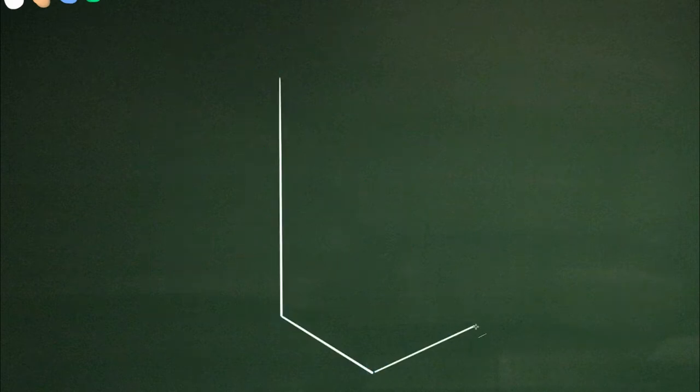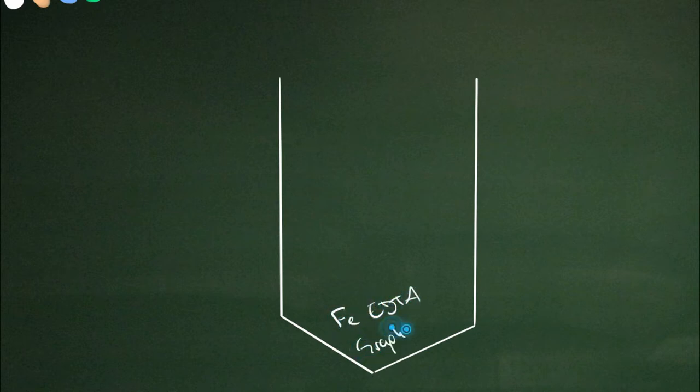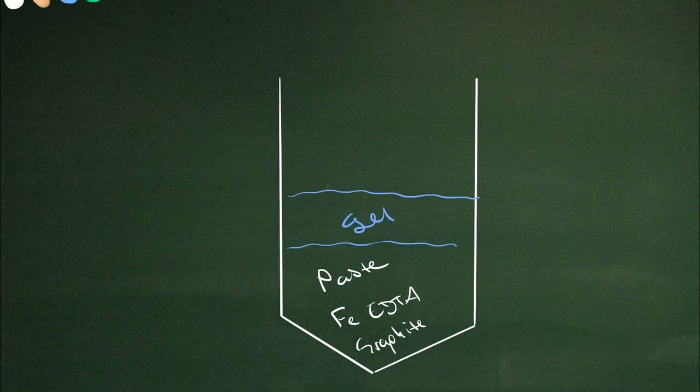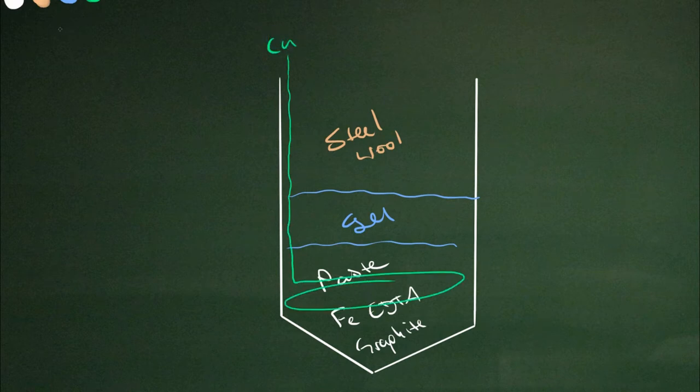The best design so far has been the tube cell in which we use a little conical tube. We put iron EDTA in a graphite paste at the bottom, and then we poured a gel on top of that, filled the top with steel wool, and connected everything up with a little insulated copper wire and a bit of iron wire at the top.